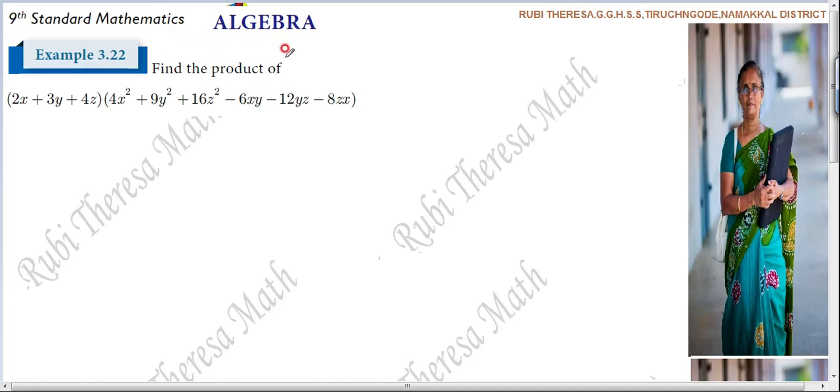Find the product of (2x + 3y + 4z) into (4x² + 9y² + 16z² - 6xy - 12yz - 8zx).